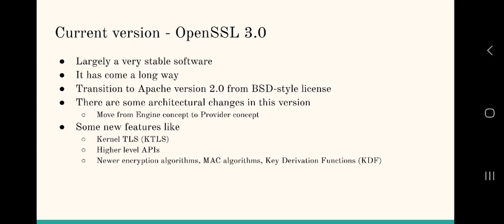GNU TLS also supports a newer type of certificate called OpenPGP, which is an alternative to the X.509 certificate type. One difference is that X.509 certificates are usually signed by their issuer at the time of being issued, while OpenPGP leaves that step open. Even though OpenPGP has been around, it hasn't picked up quite as its initiators expected, and X.509 is by far the most popular certificate type as of yet.